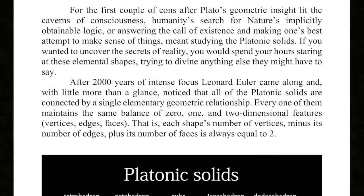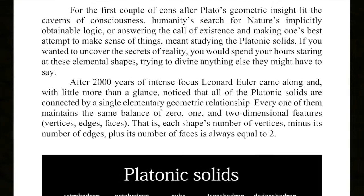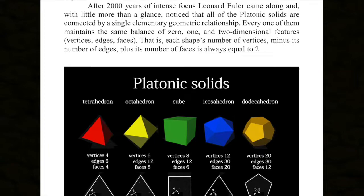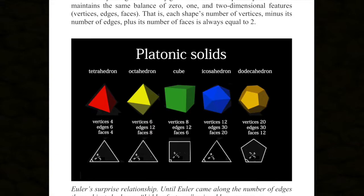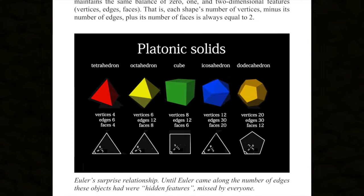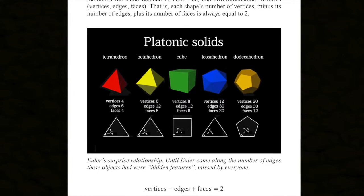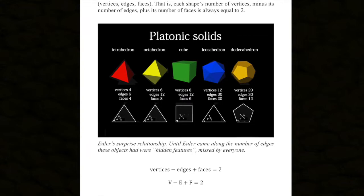After 2,000 years of intense focus, Leonard Euler came along and, with little more than a glance, noticed that all of the Platonic solids are connected by a single elementary geometric relationship. Every one of them maintains the same balance of 0, 1, and 2-dimensional features — vertices, edges, and faces. That is, each shape's number of vertices, minus its number of edges, plus its number of faces, is always equal to 2.